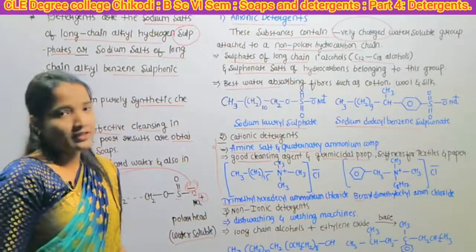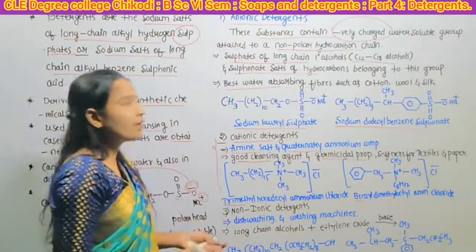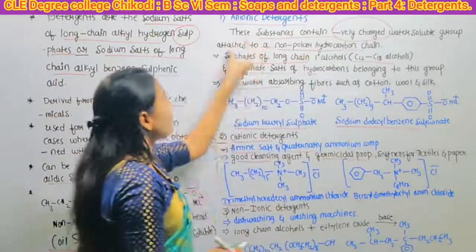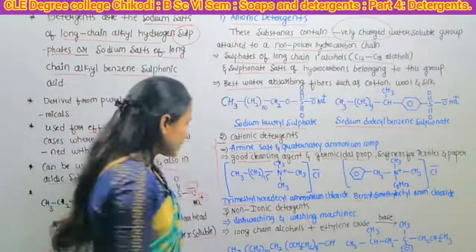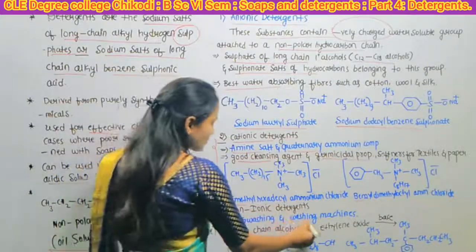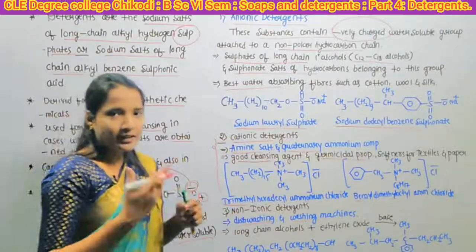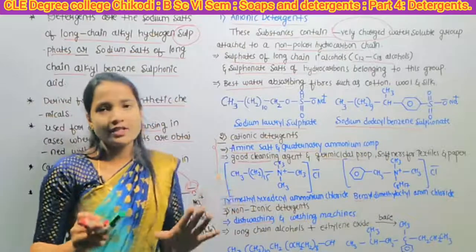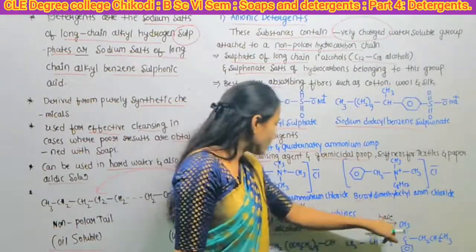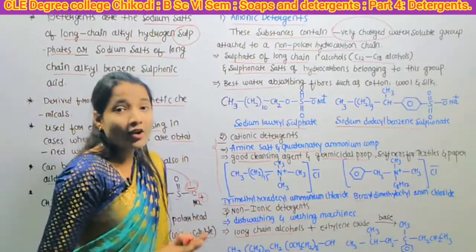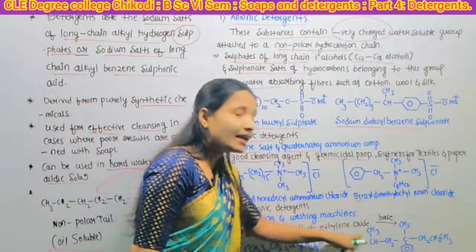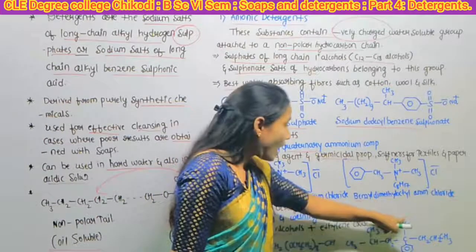The next type is non-ionic detergents. Non-ionic detergents are substances containing a non-ionic water soluble group attached to a non-polar hydrocarbon chain. This type of detergent is used in washing machines as well as for dish washing. They are formed when long chain alcohols react with ethylene oxide in the presence of a base.